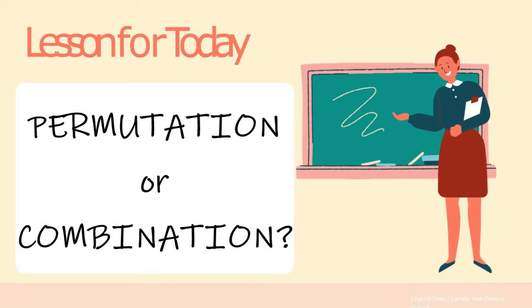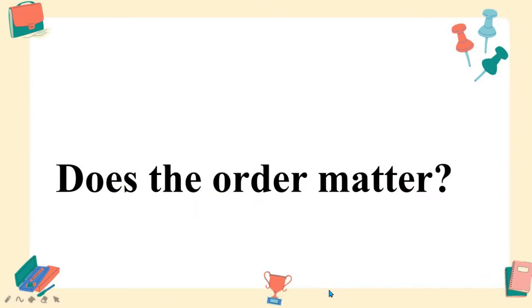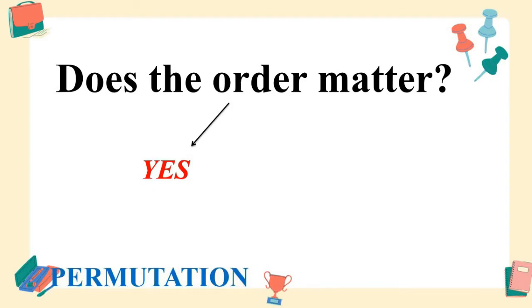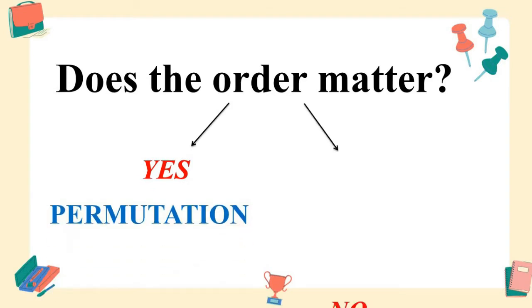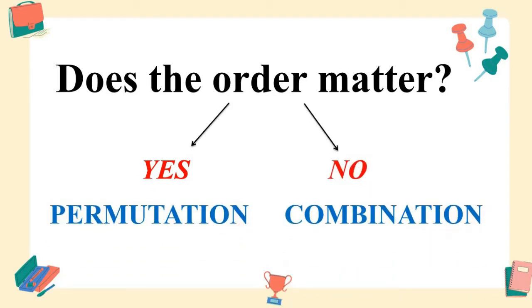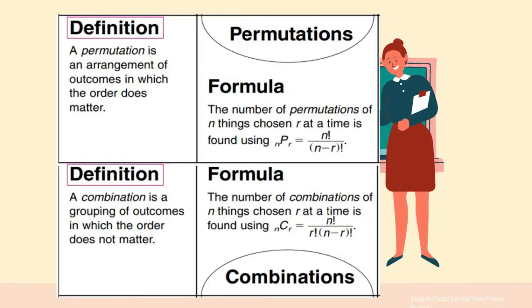Now, when is a given situation or a problem a permutation or a combination? Let me give you again this question: does the order matter? If your answer is yes, then it is permutation. But if your answer is no, it is combination.